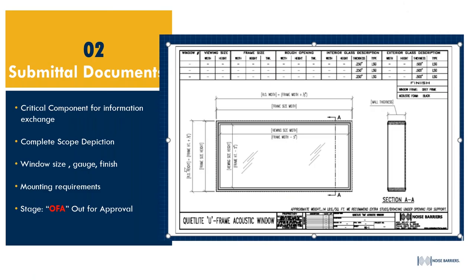Submittal documents are critical components for information exchange. We want our drafters and PMs to have everything possible from the sales rep or direct customer so submittal drawings are executed properly and delays are prevented. Key information needed includes: complete scope description, window size, gauge, glass thickness, finish, mounting requirements, stud type, and the type of opening the window is going into — to ensure proper set screws and installation details are allocated.